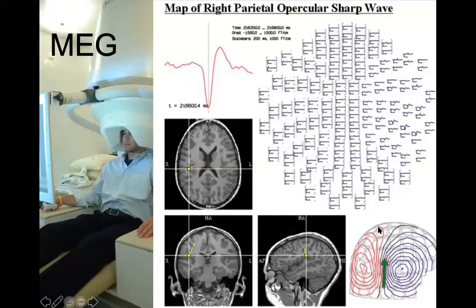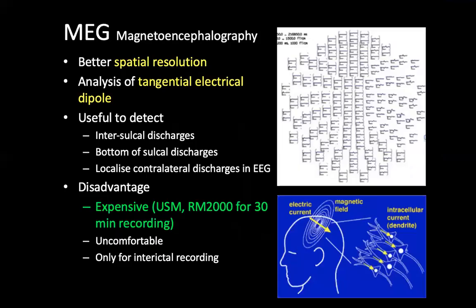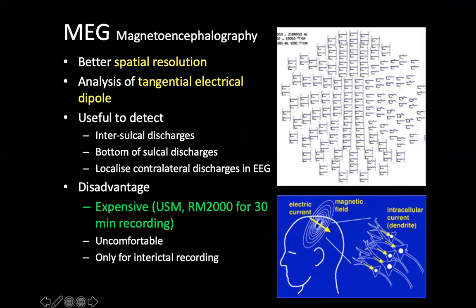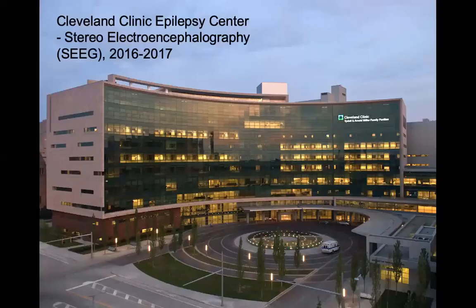MEG is useful for looking at radial electrical activity. Compared to scalp EEG, MEG records the tangential electrical dipole — looking at activity across the brain rather than away from the brain. We have an offer to do MEG in Kota Bharu, about one hour's flight from KL, but 30 minutes of MEG recording costs about 2,000 ringgit (approximately 500 US dollars), so we have not engaged the service.